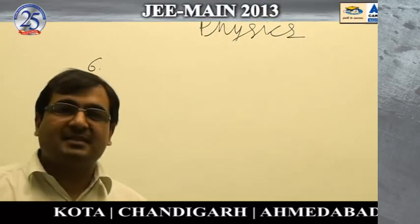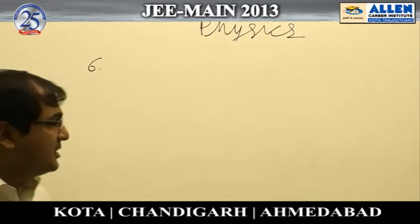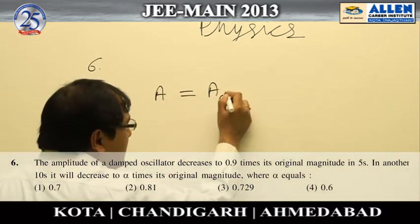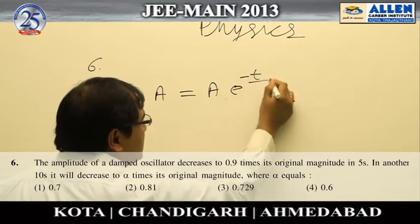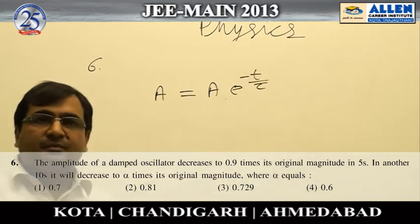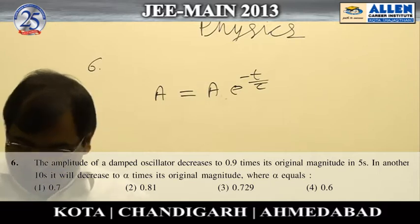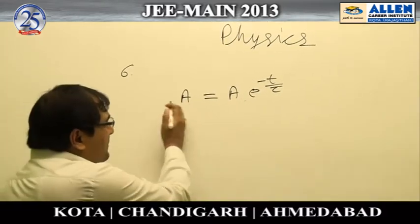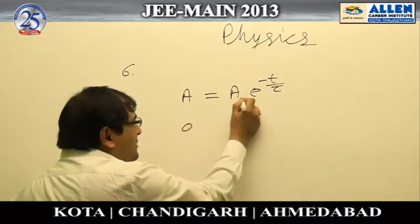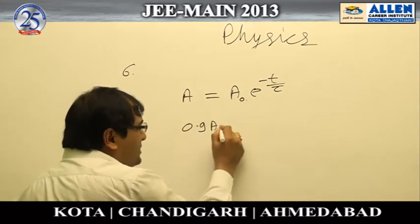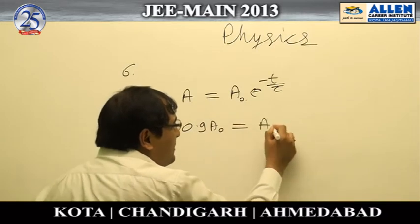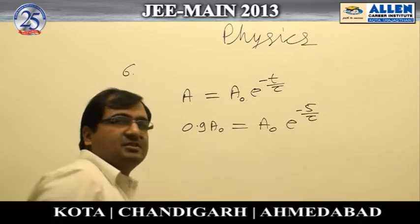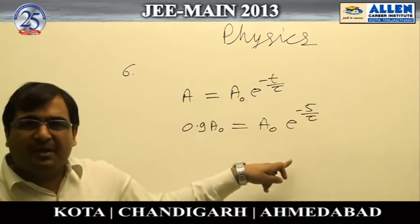Question number six is about damping. The formula for damping of amplitude is A = A₀ × e^(−t/τ). The question states that at the first instance, the amplitude becomes 0.9 of the original amplitude in five seconds.